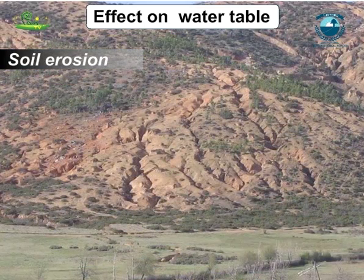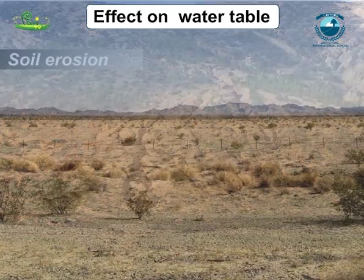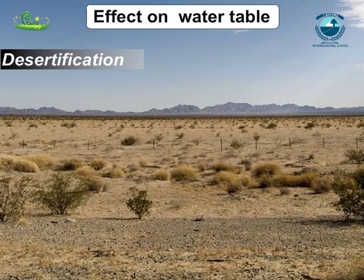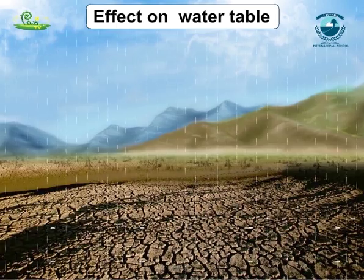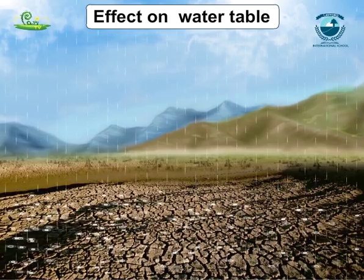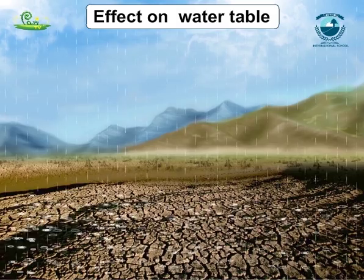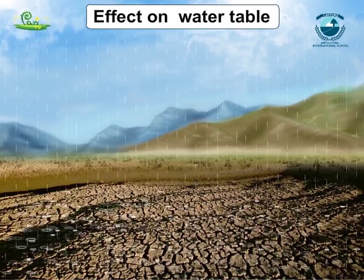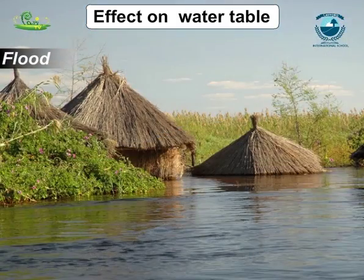Rain water washes the nutrients in the top soil away. Removal of the top layer of soil exposes the lower, hard and rocky layers. This soil has less humus and is less fertile. Gradually, the fertile land gets converted into deserts — this is called desertification. Deforestation also leads to decreased water holding capacity of the soil, and the reduced movement of water into the ground causes floods.